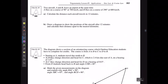If we're putting it into practice, we're going to say that two aircraft, A and B, leave the airport at the same time. Aircraft A flies on a course of 90 degrees or a bearing of 90 degrees at 700 kilometers per hour, and aircraft B flies at a course of 290 degrees at 600 kilometers per hour. Calculate the distance each aircraft travels in 12 minutes.